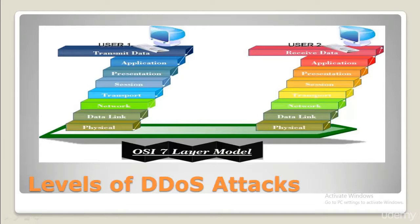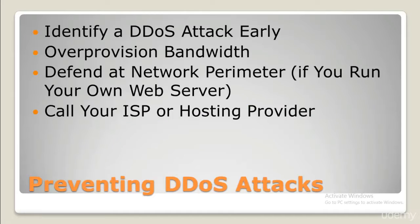There are technical measures you can take in the first few minutes of an attack. You can rate-limit your router to prevent your web server being overwhelmed, add filters to drop packets from obvious attack sources, time out half-open connections more aggressively, and drop spoofed or malformed packets — setting lower SYN, ICMP, and UDP flood drop thresholds. However, while these steps were effective in the past, DDoS attacks are now usually too large for these measures to have any significant effect.